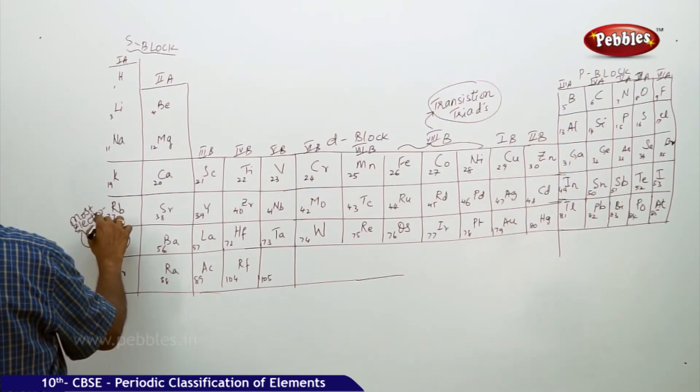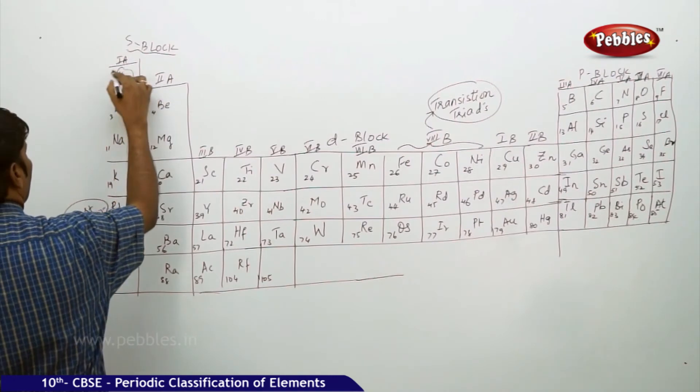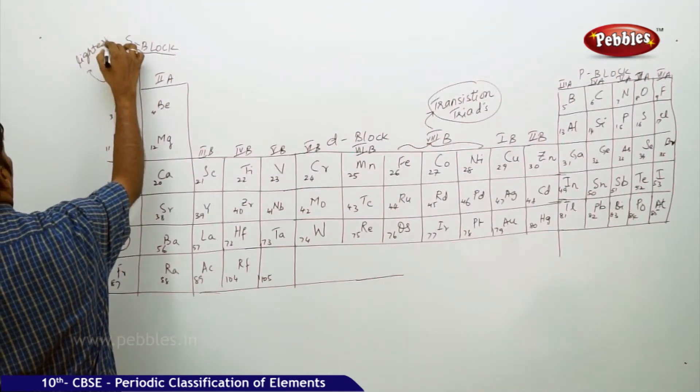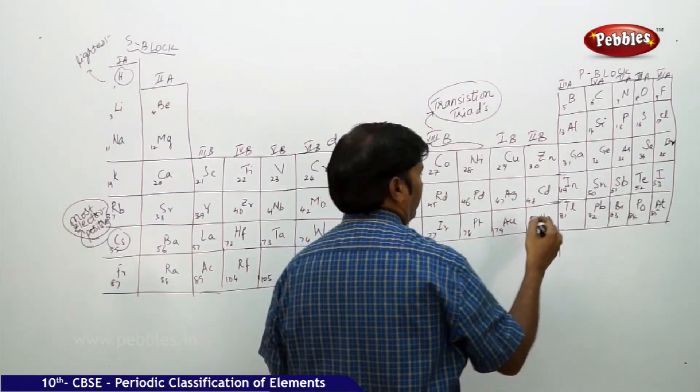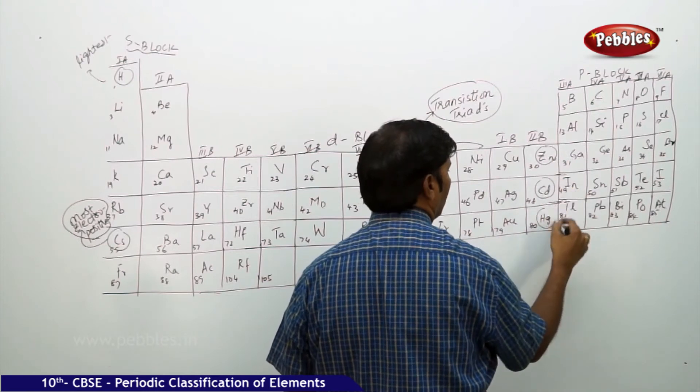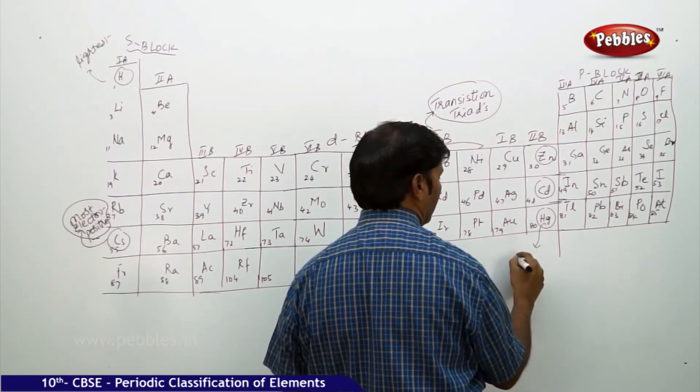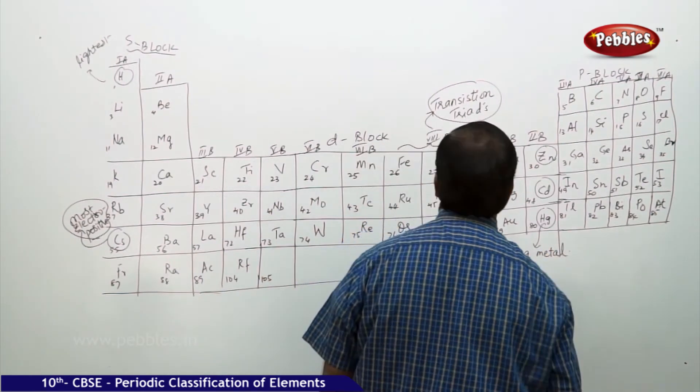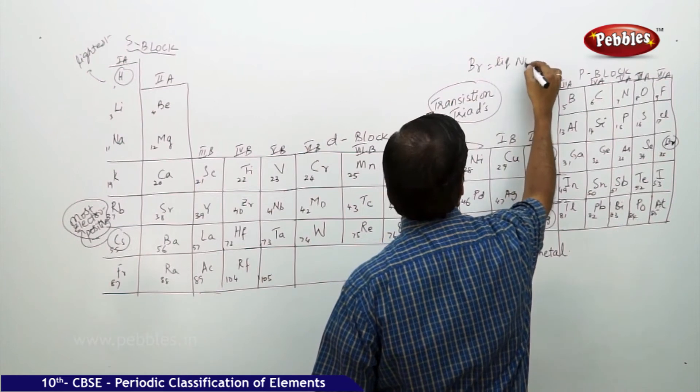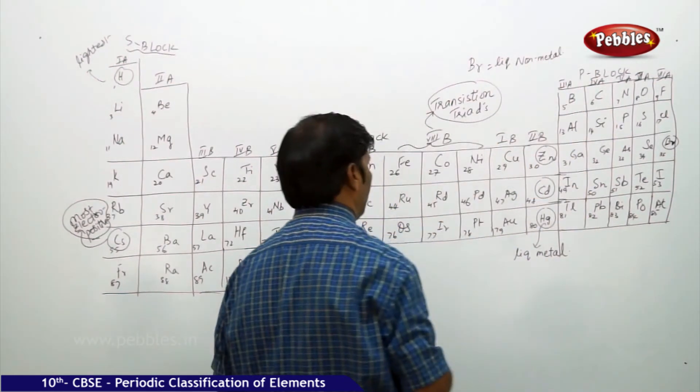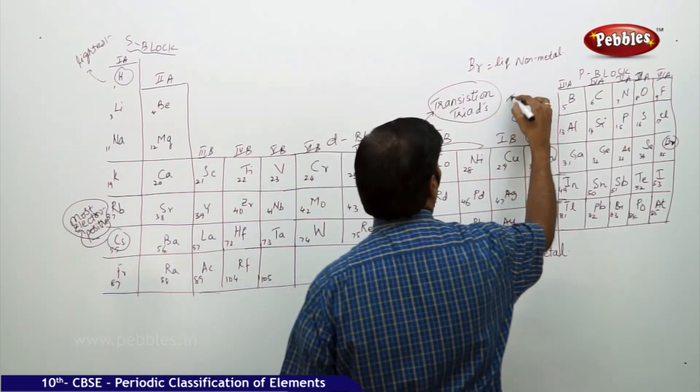The most electropositive element is cesium. The lightest element is hydrogen. Mercury is the only liquid metal.